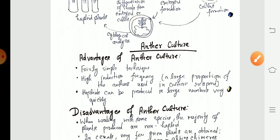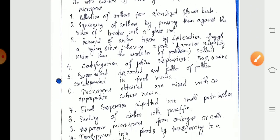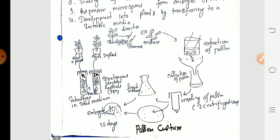Next, I will discuss pollen culture. Pollen culture is the type of culture from which haploid plants are produced. From the flowers, we will take the stamens, and from the stamens, we will take the anthers. From this anther, pollen is removed and placed on the medium.